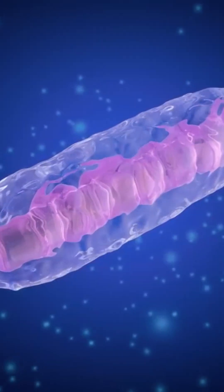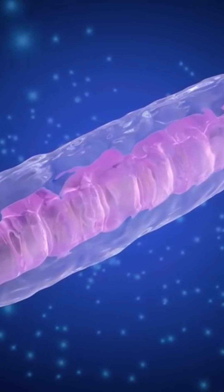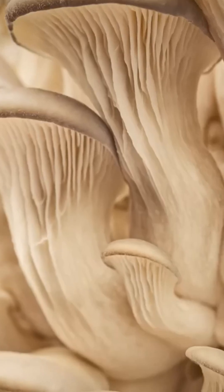Today, eukaryotes encompass three major kingdoms of the living world: plants, fungi, and animals.